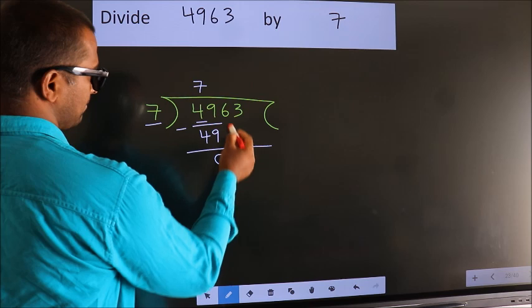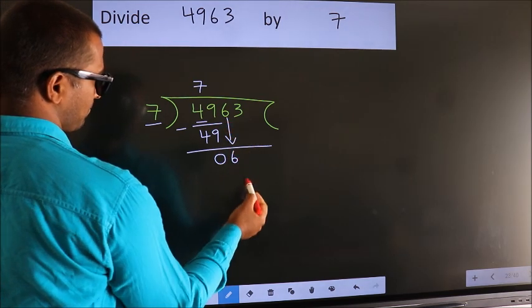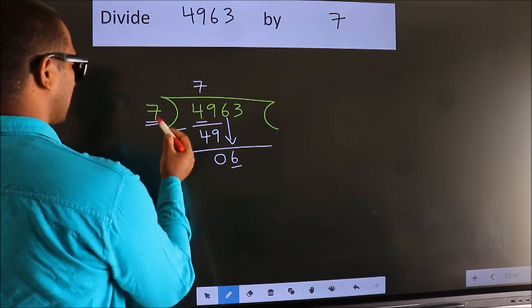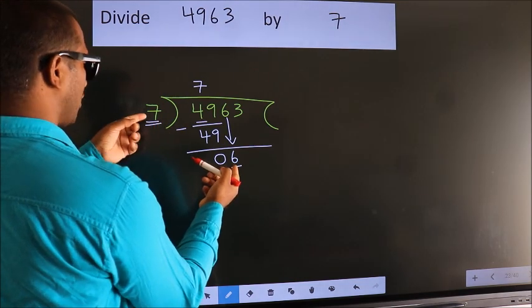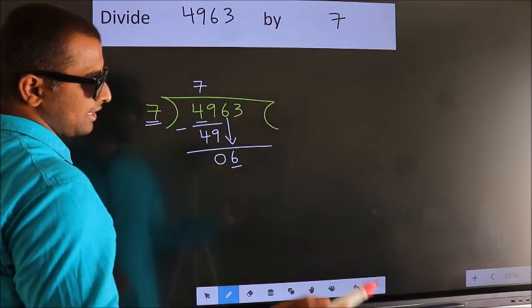After this, bring down the beside number. So 6 down. Here we have 6. Here 7. 6 smaller than 7. So we should bring down the second number.